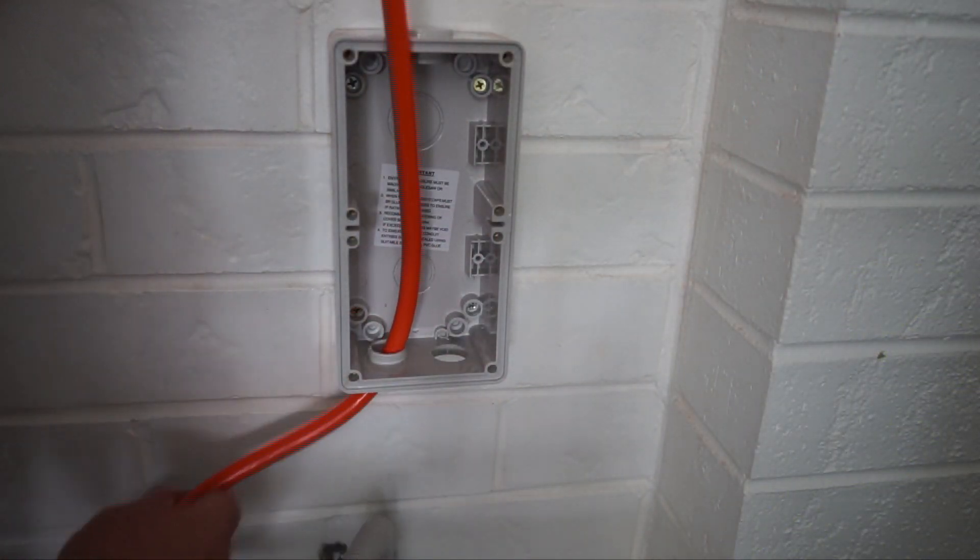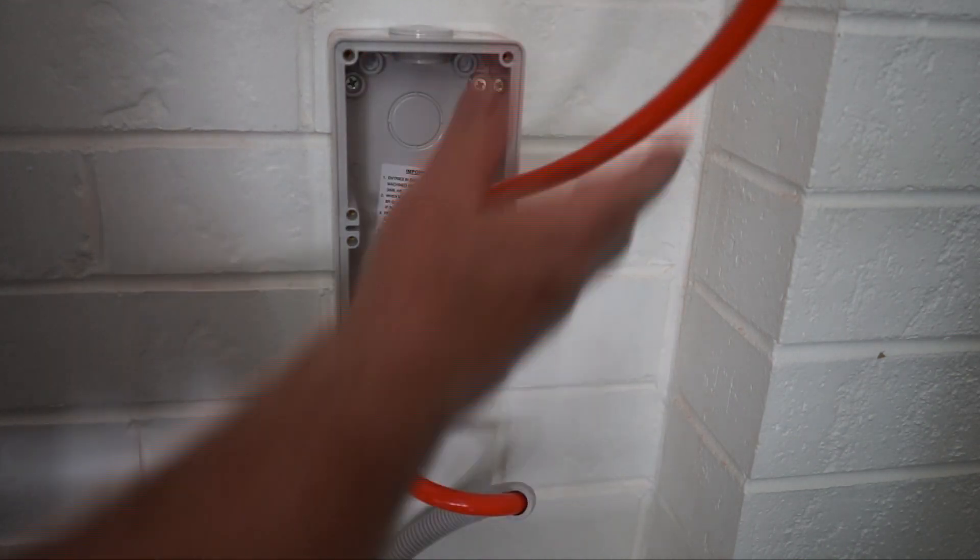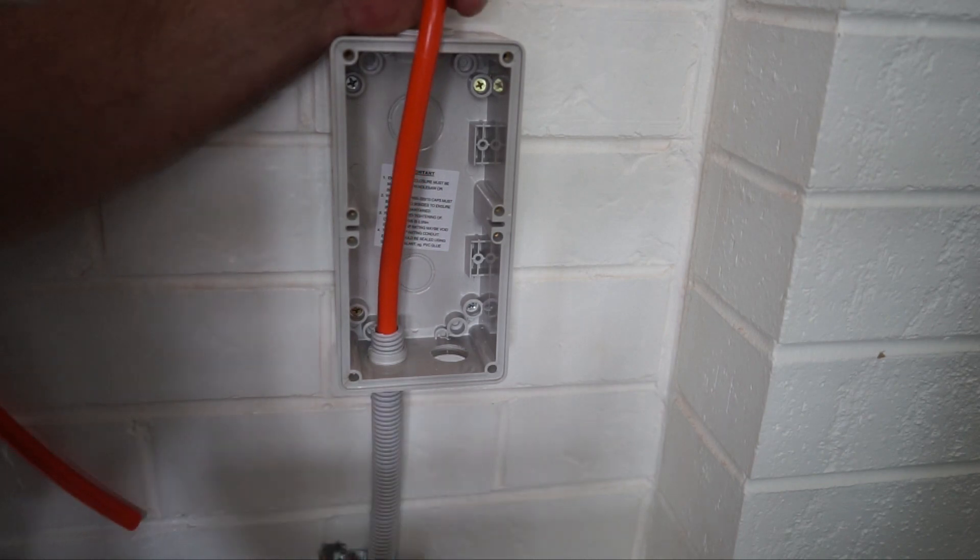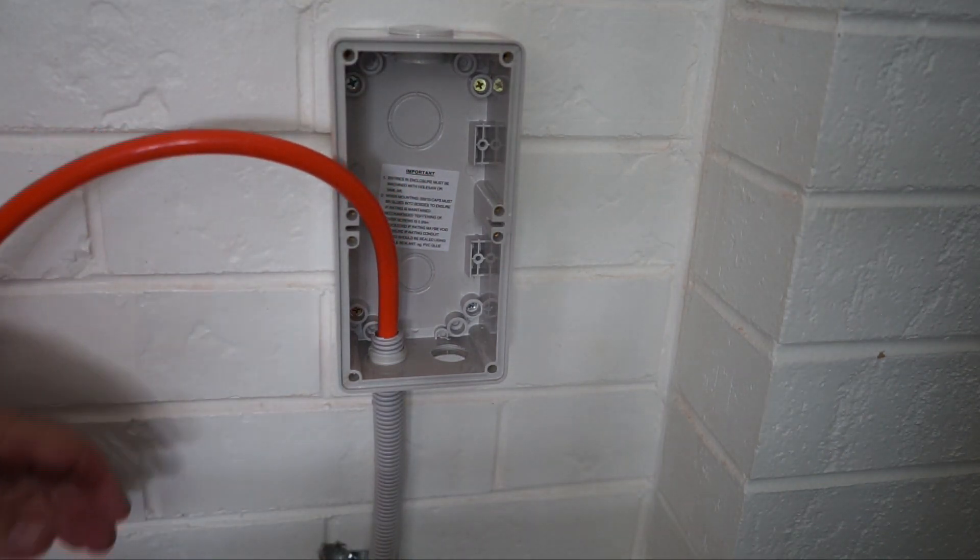You can now see that the conduit slips nicely into the hole. Once installed, I glued my flexible conduit in place. Applied tape and a zip tie was used on the electrical cable once in situ.